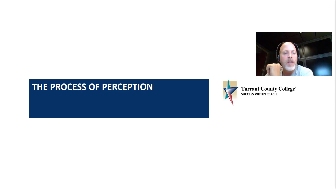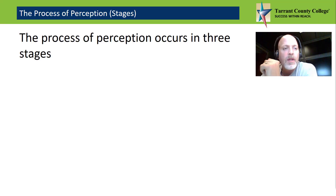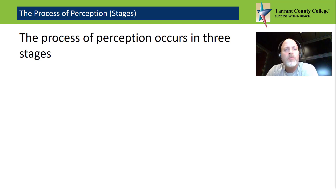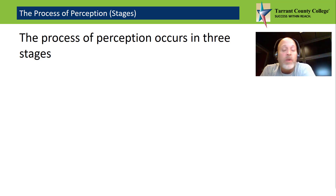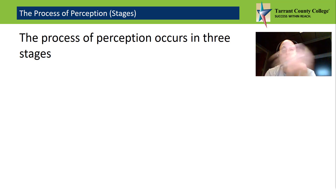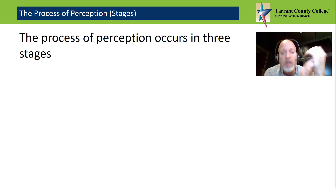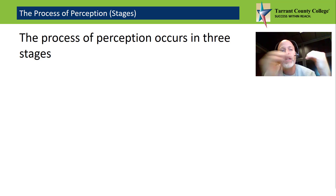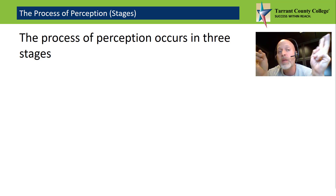Process of perception. Perception is the process of making meaning from the things we experience in our environment. And when we apply this process — this perception process — to people as well as relationships, we engage in interpersonal perception.